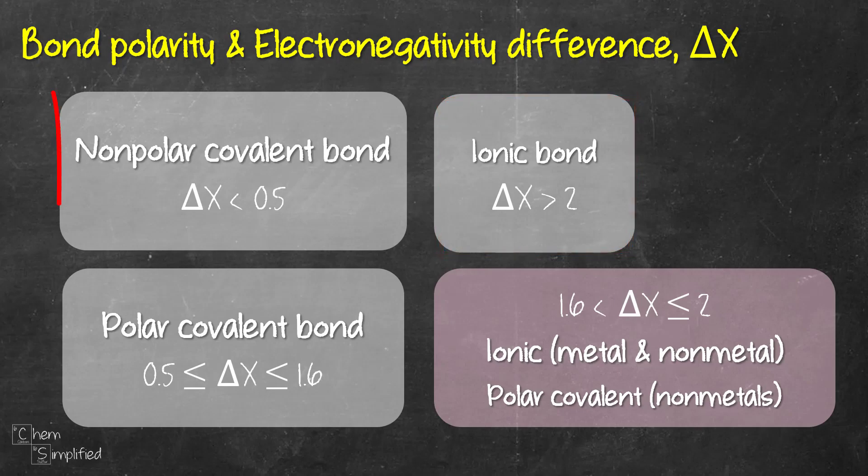For CH, the difference is 0.4, so that's right here, non-polar. And that's because it's less than 0.5. The range just kind of varies depending on your book or your teacher, so be sure to check on what's the accepted range. These are the values that I go by.